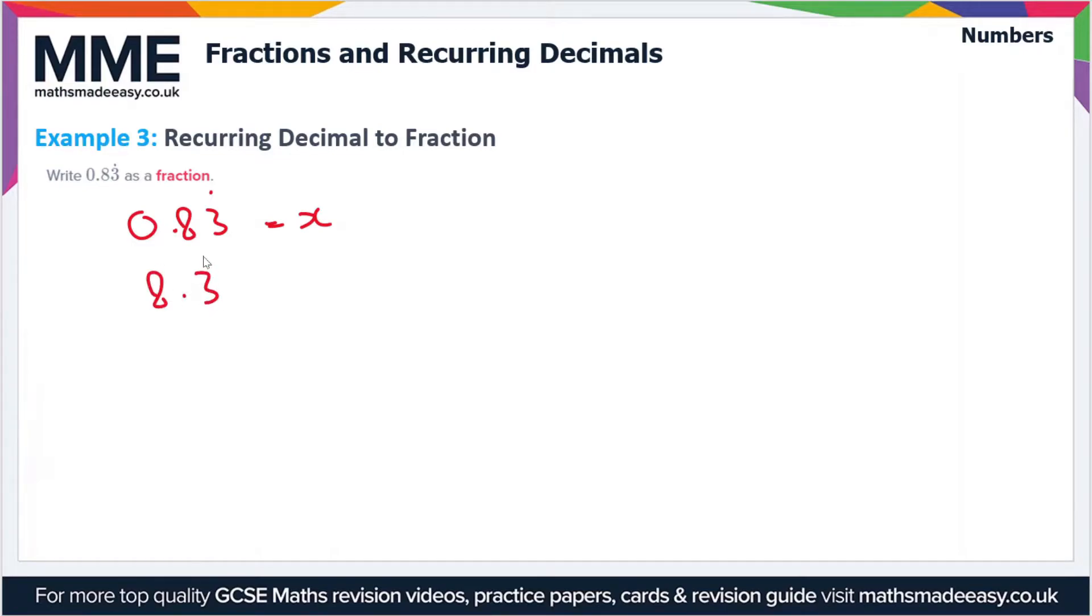Now if we do, we'll do the workings up here where there's more room. 100x minus 10x, that's going to be equal to 83.3 recurring minus 8.3 recurring. We can do this in column form just to make it clear what's going on.